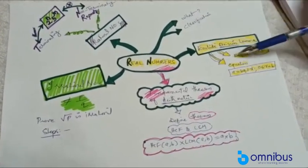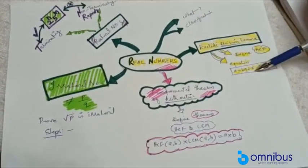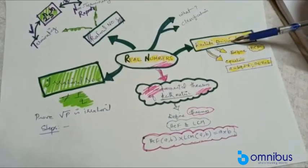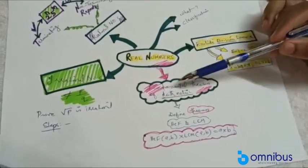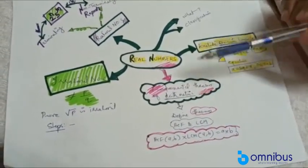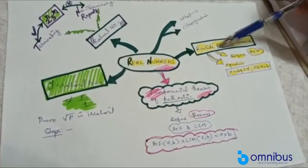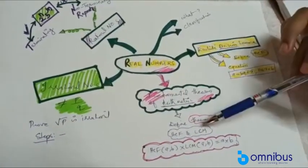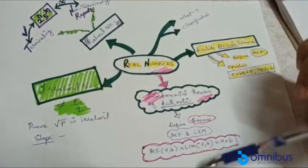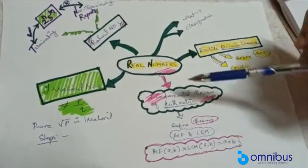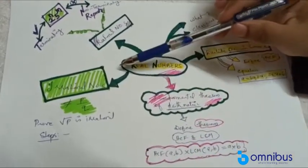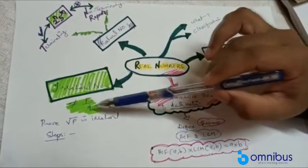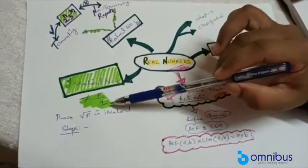We will define the equation. I will use Euclid's division. Next, we will learn the fundamental theorem of arithmetic. Then we will learn the key points. Next, we will learn irrational numbers — numbers that are not in the form of p by q.